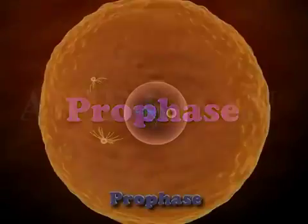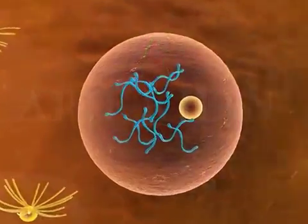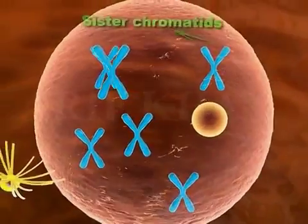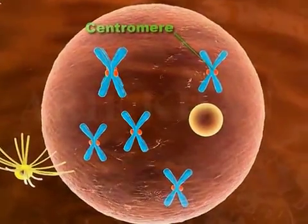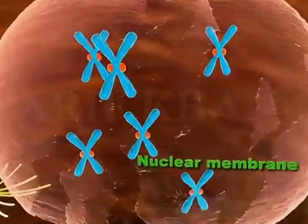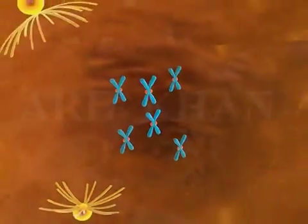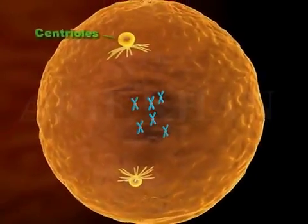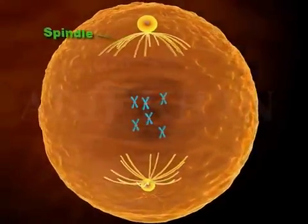Prophase. During prophase, the chromatin condenses and becomes short and thick to form chromosomes. Each chromosome has two sister chromatids joined together at the centromere. The nucleolus disappears and the nuclear membrane starts to break down. The centrosomes, each with a pair of centrioles, move apart to the opposite poles forming a spindle between them.